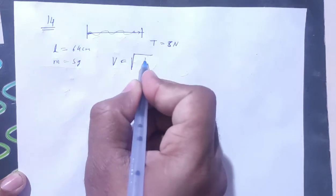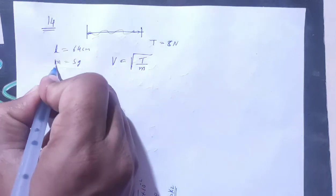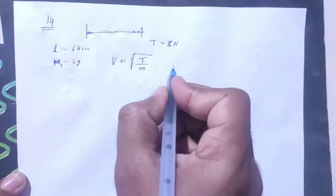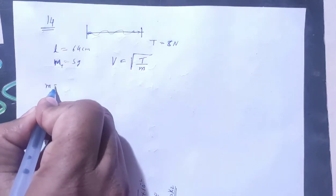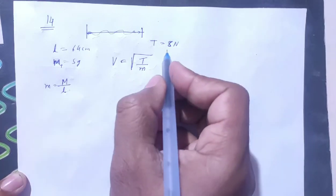Wave speed is the formula root T by m. Here m is mass per unit length. Small m is mass per unit length, tension value is 8.